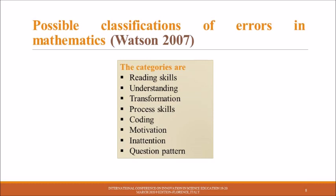Reading skills: Can the pupil read the question? Understanding: Can the pupil understand the questions? Transformation: Is the learner able to select the necessary mathematical operations required to obtain the solution? Process skills: Can the learner carry out the necessary mathematical operations for the tasks? Coding: Is the pupil able to write down the answer in an acceptable form?